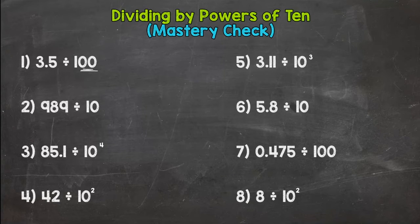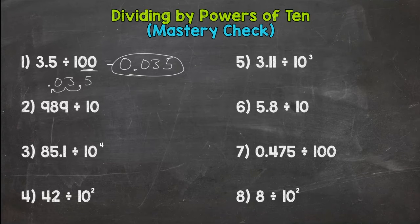We have 100, which has two zeros, so we need to move the decimal point two spots to the left to push the three and the five to the right, and we get 0.035 or thirty-five thousandths. Number two: 989 divided by 10. The decimal comes after a whole number. One zero, move it once: 98.9 or ninety-eight and nine tenths.